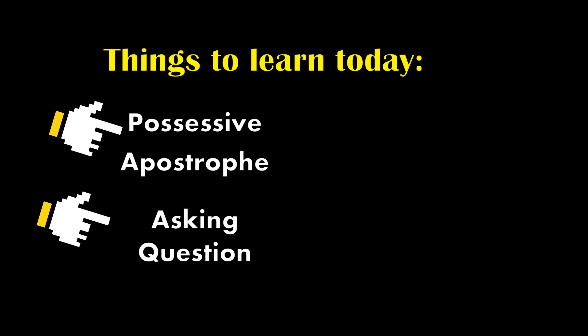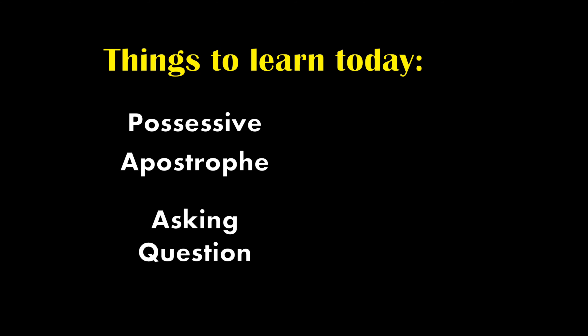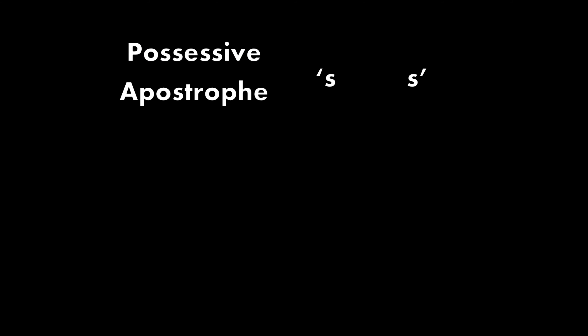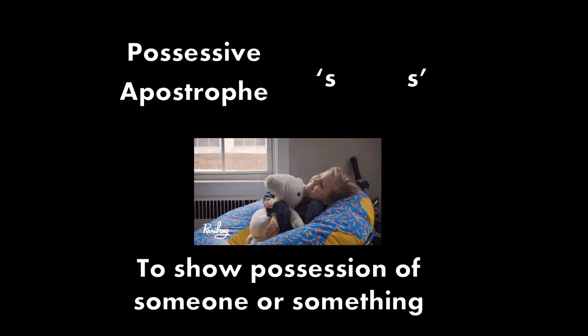So let's talk about the first one. What is possessive apostrophe? There are mainly two types of possessive apostrophe. The first one is apostrophe S and the second one is S apostrophe. We're going to talk about the function of possessive apostrophe. Possessive apostrophe is used to show possession of someone or something.